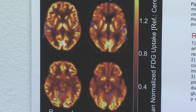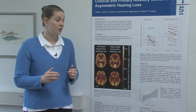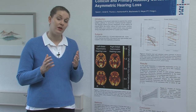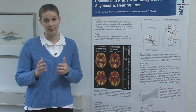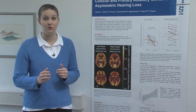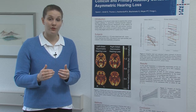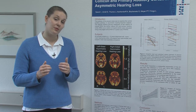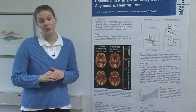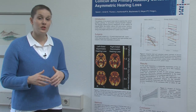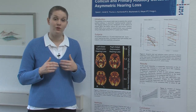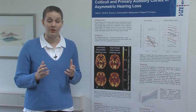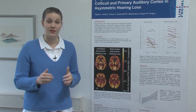We could therefore see asymmetry in both our regions of interest, the inferior colliculi and the primary auditory cortex. Furthermore, we could see that there is a correlation between the duration of hearing impairment and the FDG uptake in the primary auditory cortex contralateral to the deaf ear. With longer duration of hearing impairment, there was more regional uptake in the contralateral primary auditory cortex. We believe that to be due to cross-modal plasticity, which defines the takeover of cerebral space by other modules, for example the visual or the sensorimotor.